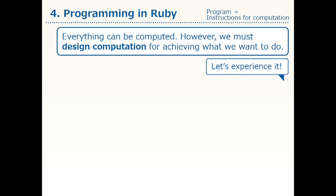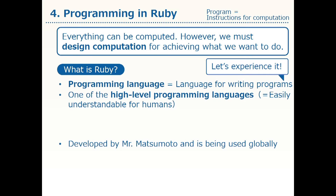Let's create a program on our own. Let's use the programming language Ruby to do some programming. Ruby is a language for writing programs — a programming language. It's a programming language of Japanese origin, designed by Yukihiro Matsumoto. It's one of the most widely used languages globally.